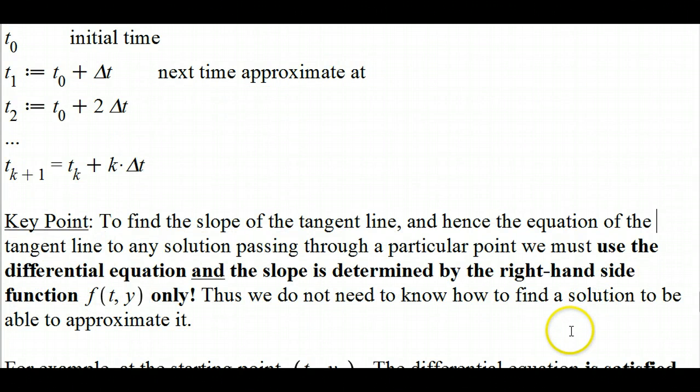One key point to mention here is that to find the slope of any tangent line and therefore define the equation of your line for any solution passing through a particular point, you need to use the differential equation. The differential equation is key. That and the initial condition. That slope is going to be only determined by the right-hand side function f only. You don't need to know the solution to approximate it.